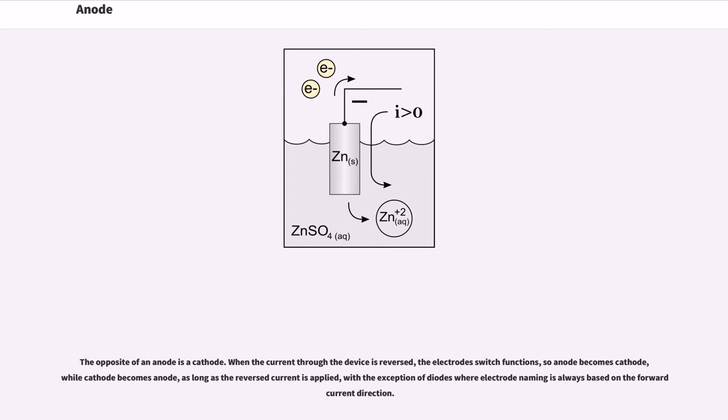The opposite of an anode is a cathode. When the current through the device is reversed, the electrodes switch functions, so anode becomes cathode, while cathode becomes anode, as long as the reversed current is applied, with the exception of diodes where electrode naming is always based on the forward current direction.